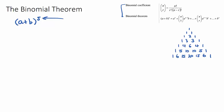You may have seen Pascal's triangle before. It's a very famous triangle that starts with a one at the top, and each new row starts with a one and finishes with a one. If you find two numbers and add them together, you get the number directly below. So one plus one is two, one and two is three, two and one is three, one and three is four, three and three is six, three and one is four.